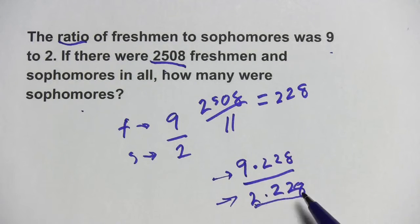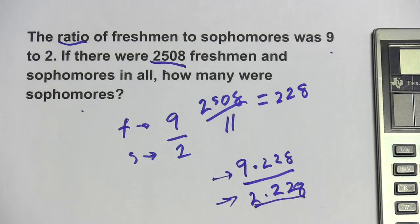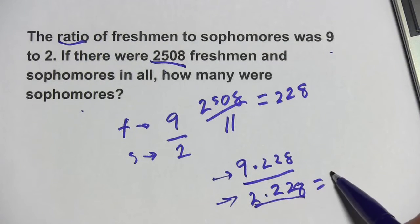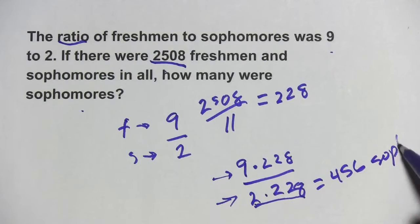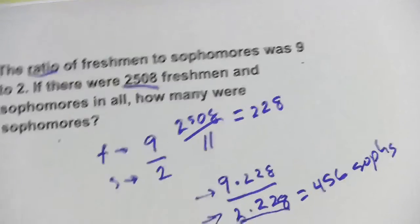We're looking for sophomores, so I'm just going to do this part of the problem. So 228 times 2, and that is 456 sophomores. Let's try another one.